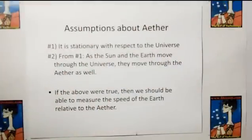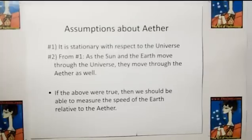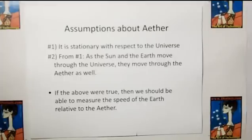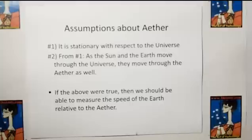They made some assumptions, and these are critical assumptions. They assumed that the aether must be stationary with respect to the universe, and that as the sun and the earth move through the universe, they must move through the ether as well. So if those assumptions were true, then we should be able to measure the speed of the earth relative to the ether.